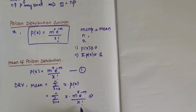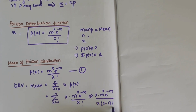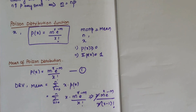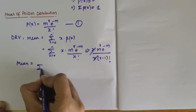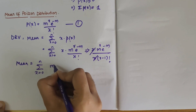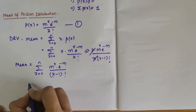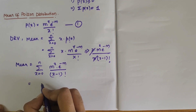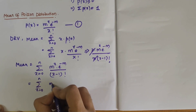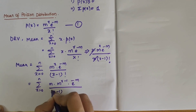Here x and x! are present, so we can cancel x from x factorial: x / x! = 1 / (x−1)!. The equation becomes: mean = summation from x=0 to n of m^x · e^(−m) / (x−1)!. This can be further written by splitting m^x as m · m^(x−1), giving: summation of m · m^(x−1) · e^(−m) / (x−1)!.